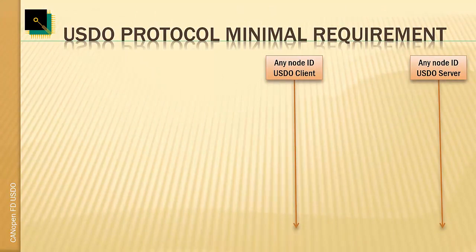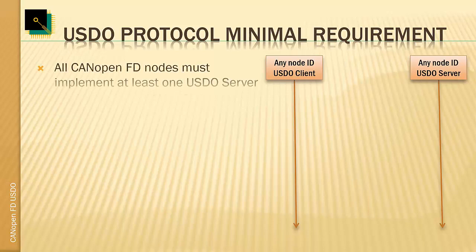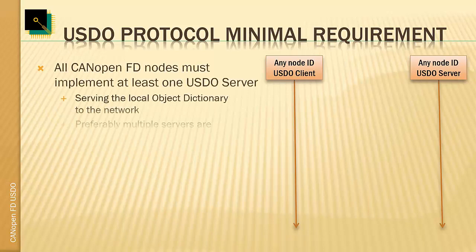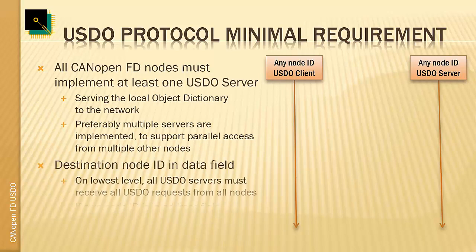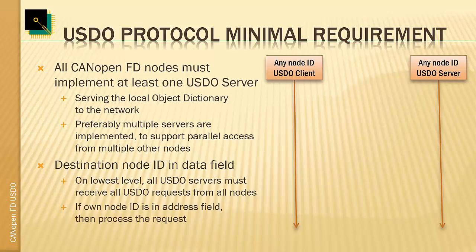In order to be CANopen FD compliant, every node must implement at least one USDO server so that it can send responses to requests received. The server is serving its local object dictionary to the network. Preferably you implement multiple USDO servers so that you can answer multiple requests received in parallel from different nodes, or to support the session numbering.